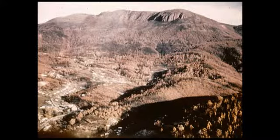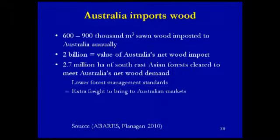A picture of Hobart after the 1967 fire — you can still see dead standing trees — reminds us that fire burns our forests and took lives. As we try to store carbon in forests, we're storing biomass that is the feedstock for wildfires, and we can't separate managing forests for carbon from fire outcomes. Australia's fire hazard is expected to increase with climate change. Australia also imports between 600,000 and 900,000 cubic meters of sawn wood annually, plus much larger quantities of paper, with a net wood import deficit of about two billion dollars, mostly from Southeast Asia.